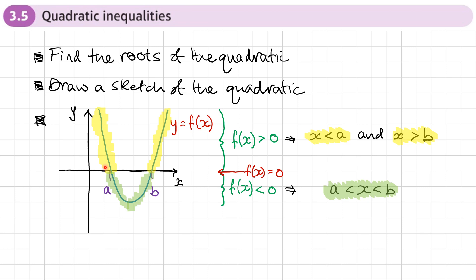I would always suggest drawing a sketch so you can physically see whether it's above the axis, whether it's below the axis, whether the two inequalities are separated out, or whether they're joined together. I've added what the inequalities would look like as a diagram so you can physically see the solutions: in between A and B for the bottom part, and less than A or greater than B for the top part.